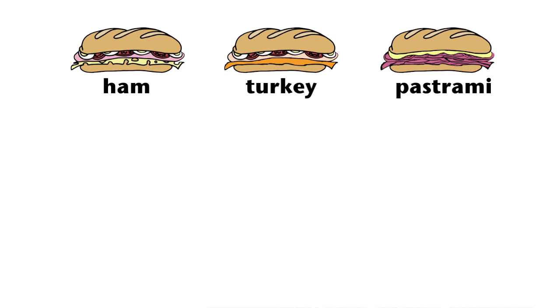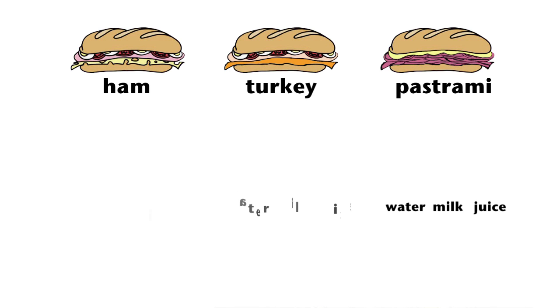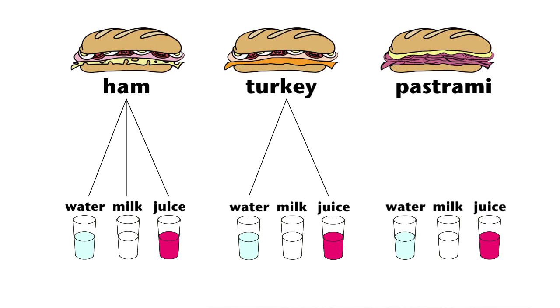You can show the same outcomes with a different kind of systematic list — a tree diagram. Write down ham, turkey, and pastrami. Then show three branches from each sandwich to water, milk, and juice. There are nine branches on the tree diagram. I see the same nine outcomes in your diagram that Jonah had on his list. So there is more than one way to solve a problem.